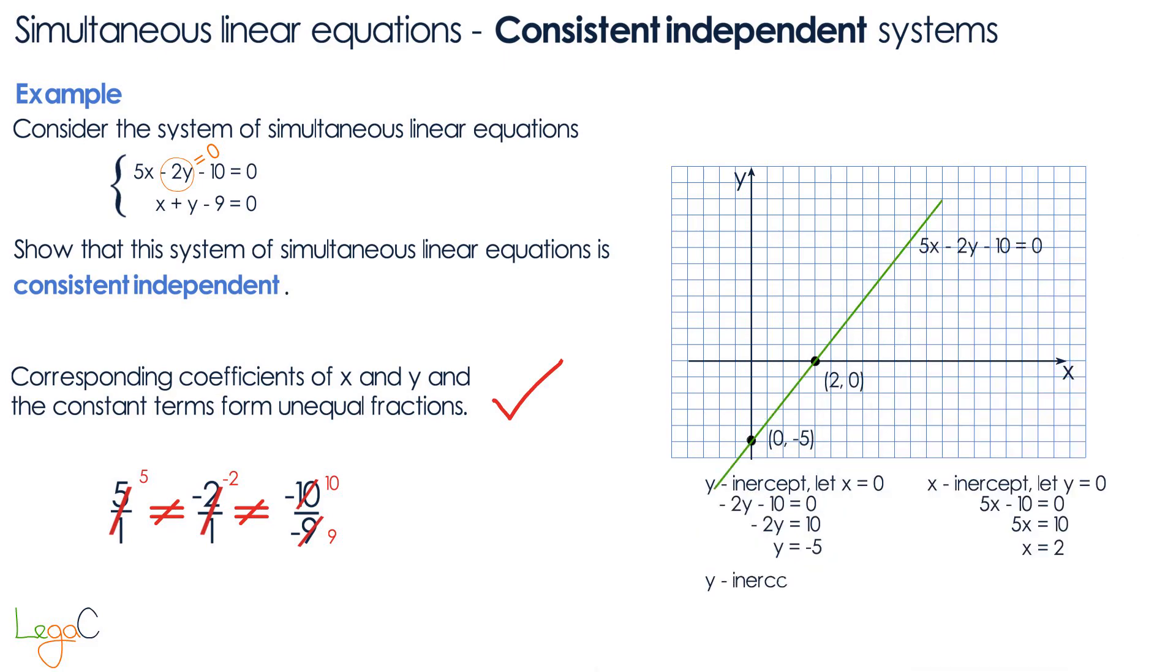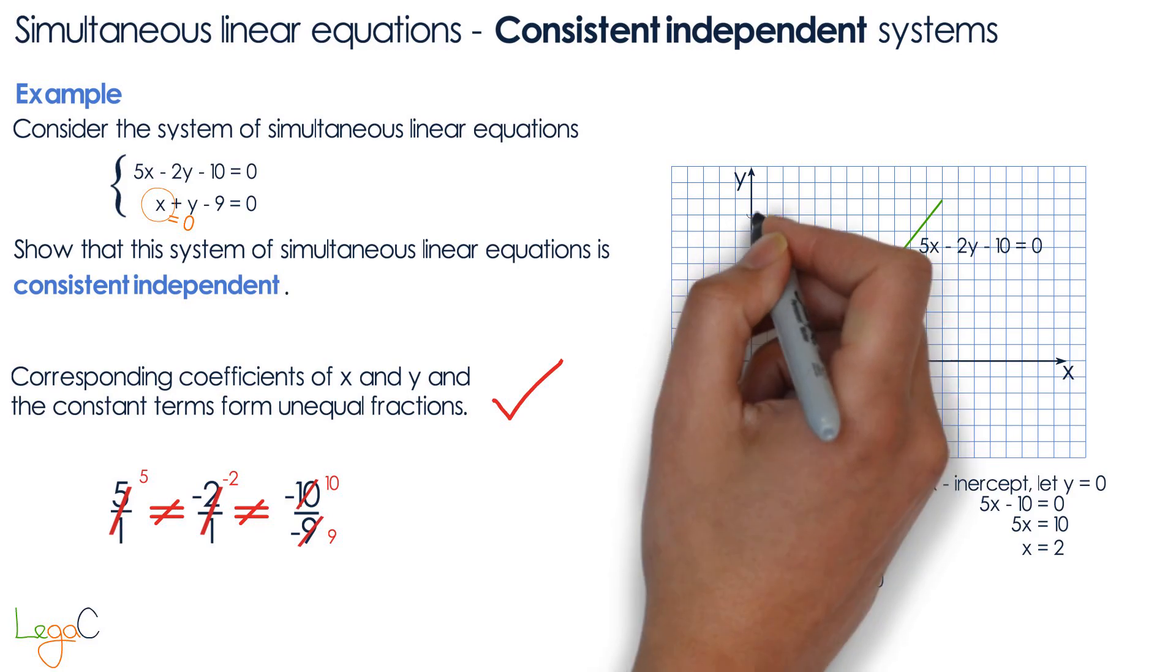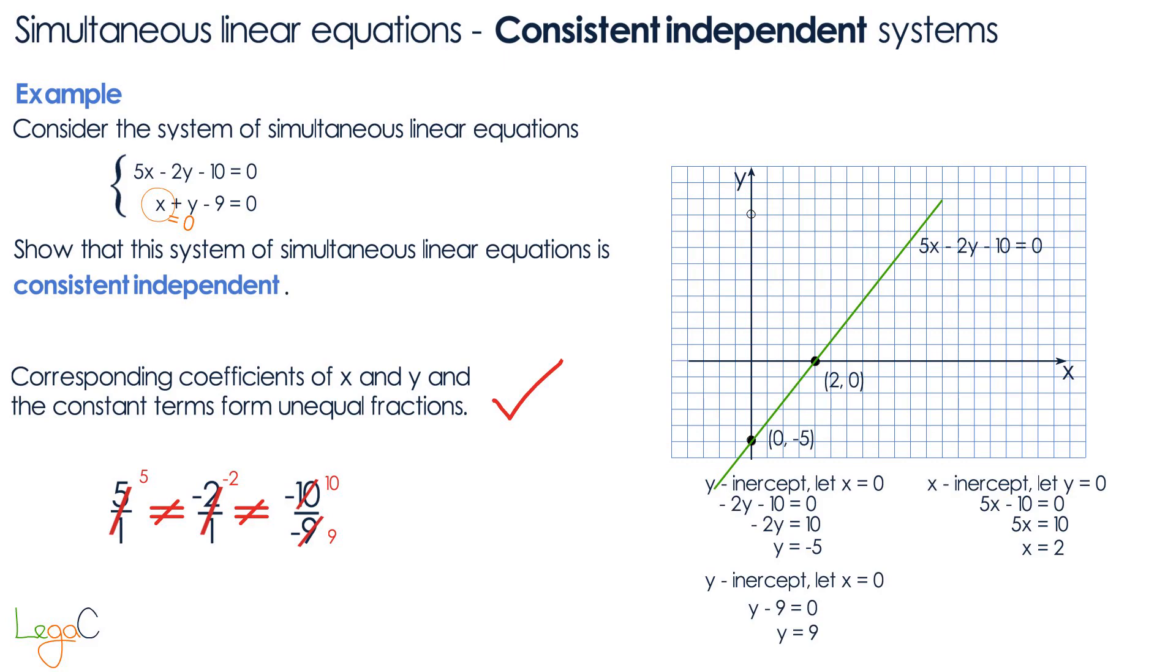Then we do the same thing for the second equation. We calculate the y-intercept. We let x equals 0 so the equation becomes y minus 9 equals 0 so the y-coordinate is y equals 9. We plot this point on the graph.